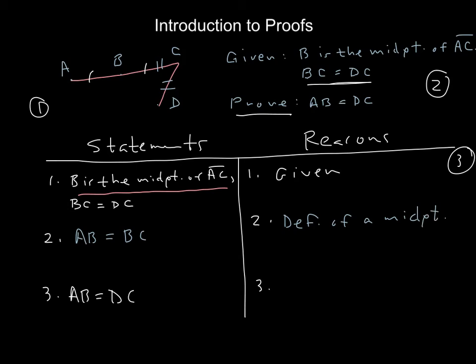By definition, a midpoint is in the exact middle. Since B is in the exact middle, then AB equals BC. Now, how could that help me get to my goal? My goal is proving that AB equals DC.